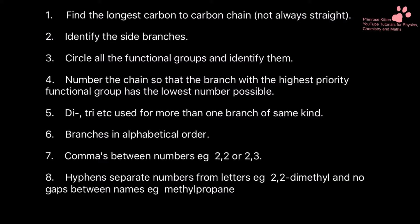Here are the rules to use when naming anything in organic chemistry. Work out what the longest carbon-carbon chain is — it doesn't have to be straight, get a highlighter and colour it in. Put a big circle around all the side branches and functional groups and work out what they are. Number it so that the highest priority functional group has the lowest number. If you've got more than one of the same group, things go in alphabetical order. Commas go between numbers and hyphens separate letters from numbers.